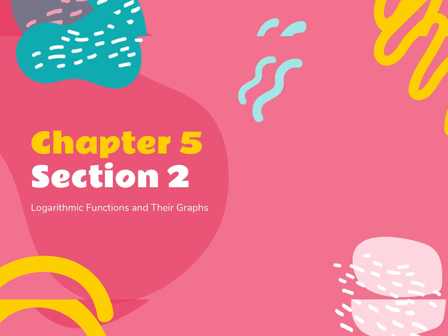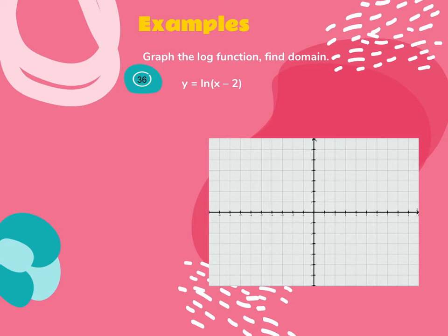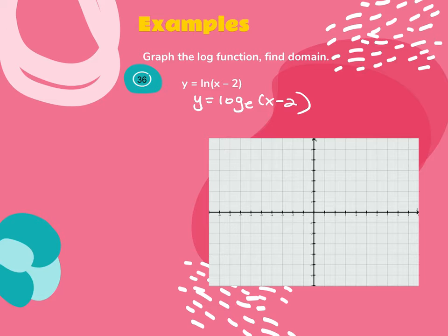We are still in section 5.2, log functions and their graphs. We are finishing with the ln graphs. So ln is the same thing as log base e. This would be the same thing as log base e of x minus 2. Remember with logs, we have a vertical asymptote, a restricted domain, and an x-intercept.